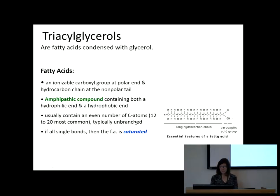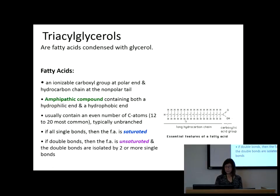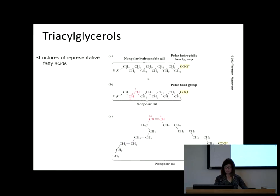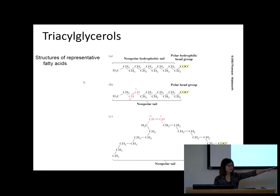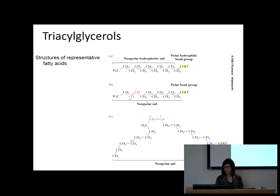Remember our definition of saturated means we're saturated with hydrogens — no double bonds in a saturated fatty acid. If we see a double bond, it's an unsaturated fatty acid, and we can have more than one. When we have a chain of hydrocarbons, the last slide showed them as a perfectly flat straight chain, but really it's a zigzag. A saturated fatty acid is straight while unsaturated fatty acids have kinks.